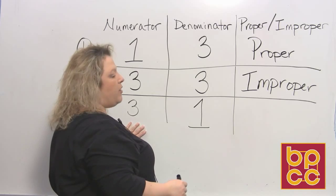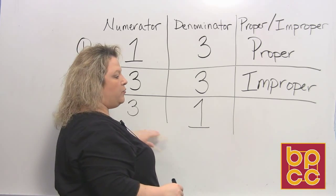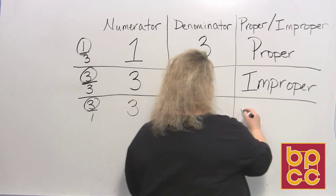And the bottom fraction - the numerator is three, the denominator is one. Well, three is obviously bigger than one, so that is also improper.